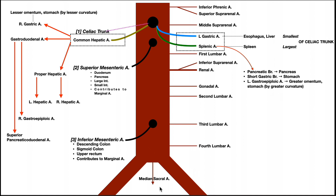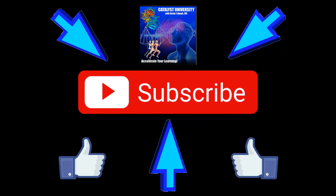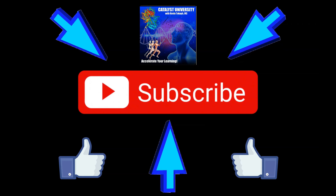This video gave an overview of all the branches coming off the abdominal aorta. In the next video we'll continue by looking at the common iliac arteries, then the external and internal iliac. Please make sure to like this video and subscribe to my channel for future videos and notifications. Thank you.